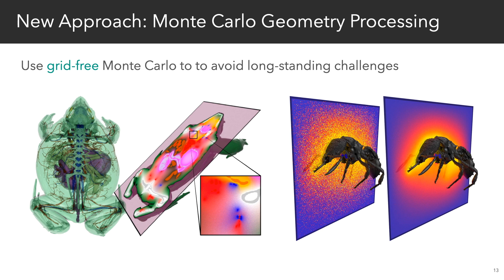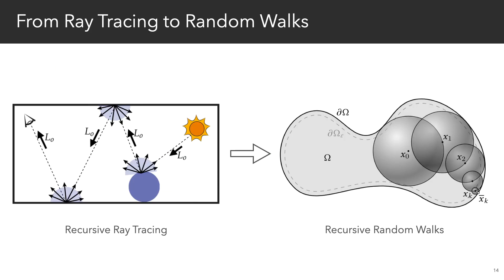And so for all of these reasons, we're really excited to be presenting a new approach to geometry processing based on grid-free Monte Carlo methods. At a high level, our technique replaces recursive ray tracing in rendering with recursive random walks for geometry processing.